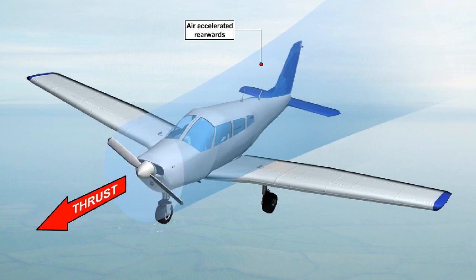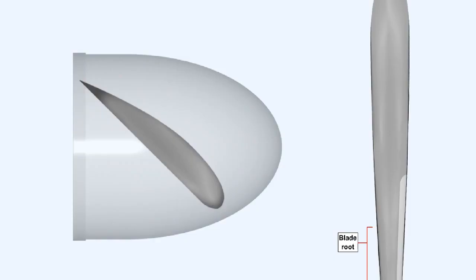In order to be able to explain how a propeller works, it's necessary that we use a certain amount of terminology. Like a wing, a propeller blade has a root, and a tip, a leading and trailing edge, and a cambered cross section, whose chord line passes from the center of the leading edge radius to the trailing edge.